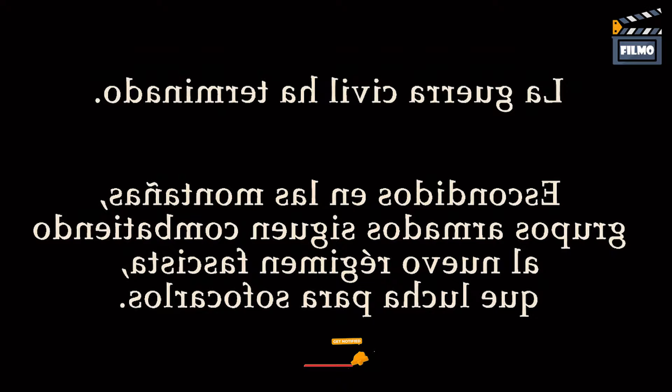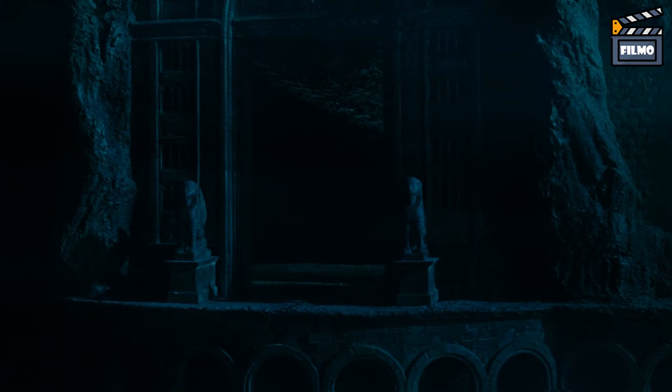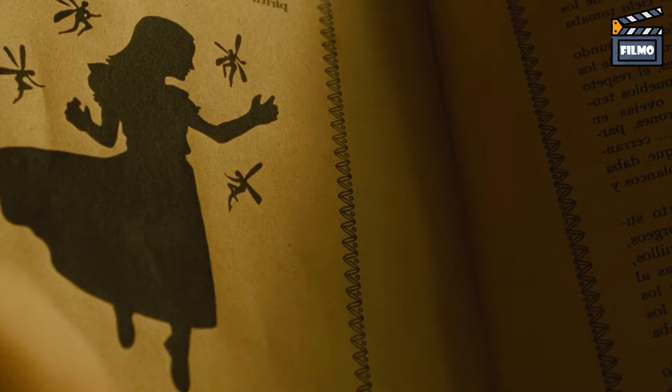The movie begins with an unseen narrator who tells of an underground kingdom that was devoid of lies and pain. Long ago the young princess of the realm escaped, curious to see the world above, but was blinded by the bright sunlight and all memories of her past were erased. She eventually succumbs to the natural world, her inability to adapt to the new surroundings leaving her helpless. Her father the king remained hopeful that his daughter would return to her kingdom someday in another place and time.